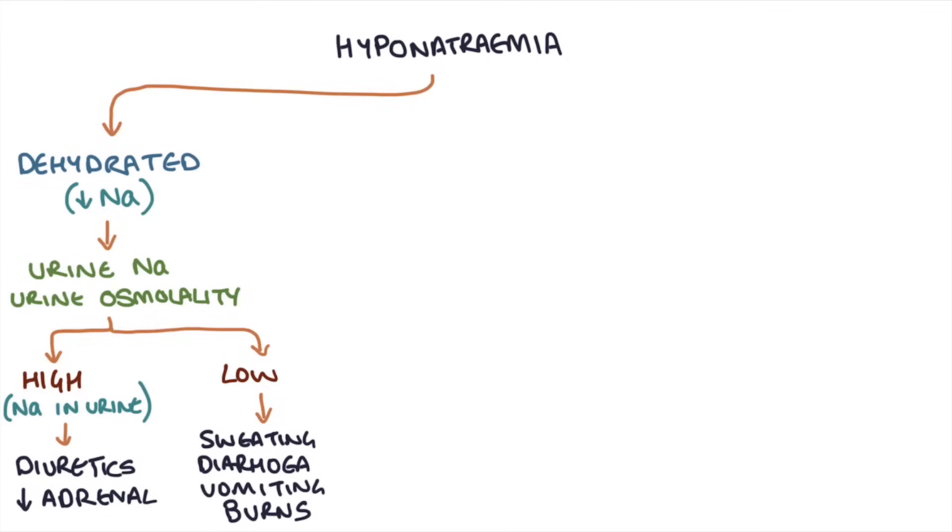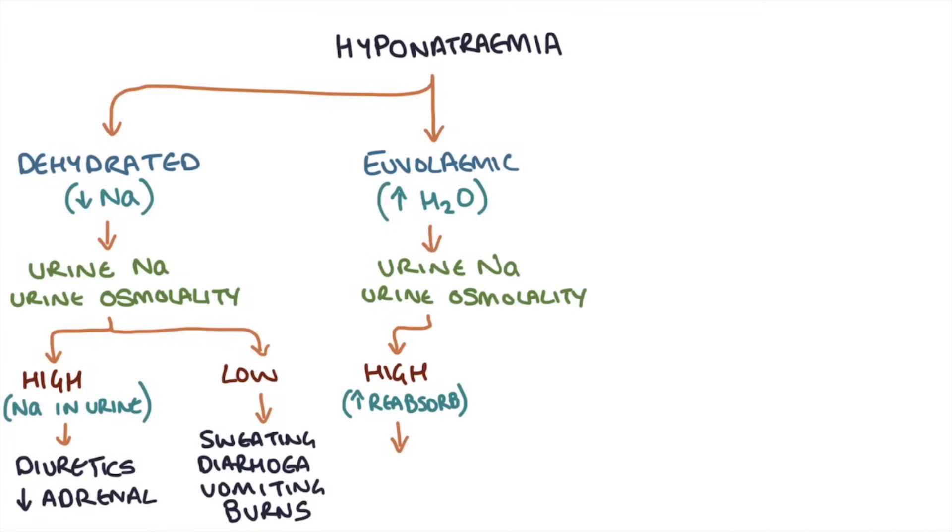Now let's say you assess them and they're euvolemic. You know there is a dilutional hyponatremia, meaning excessive water has been gained. You check the urine sodium and the urine osmolality. If this is high, you know the urine is being concentrated by excessive reabsorption of water in the kidneys. Therefore, the patient has syndrome of inappropriate ADH, or SIADH. If this is low, you know the water is gained through excessive consumption, which is called water intoxication.